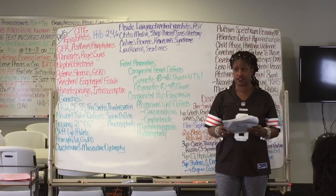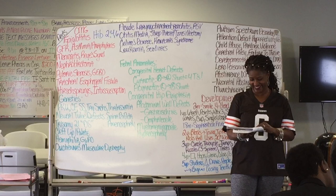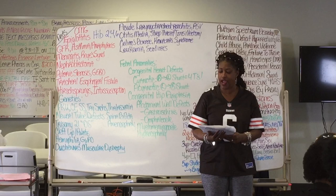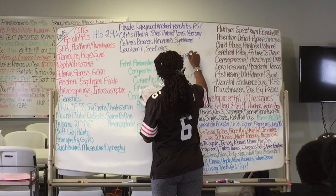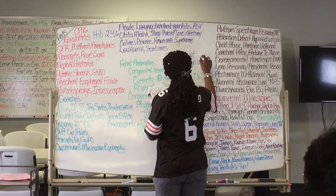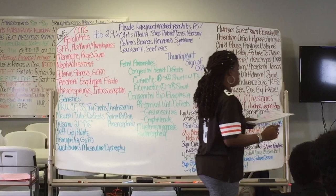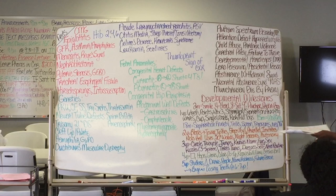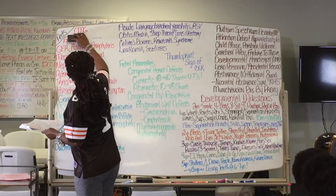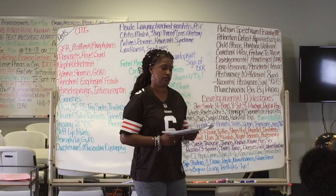This baby has a severe sore throat — it's basically an obstruction. You have to know the thumbprint sign on chest X-ray. This is droplet precautions. The population at risk is a toddler. The next three letters: grunting, flaring, retracting — leave them on this page.